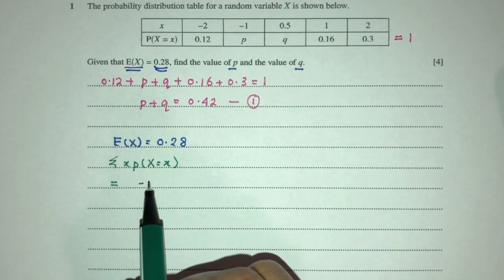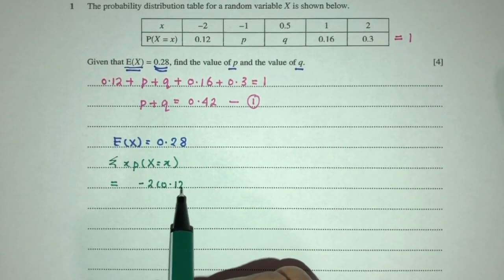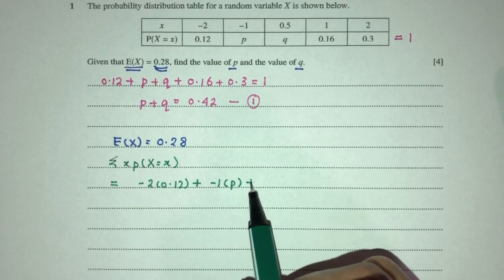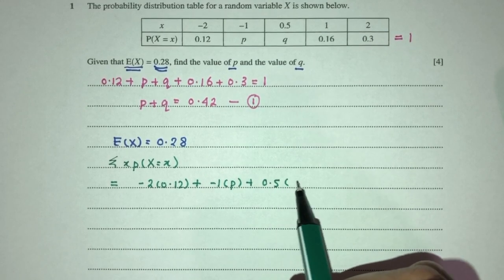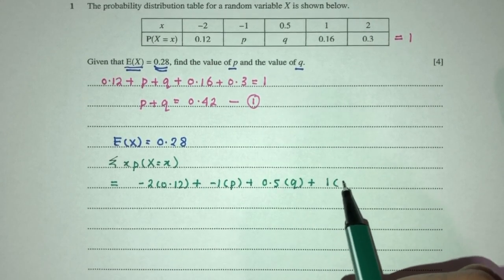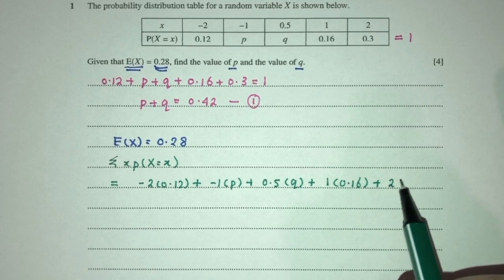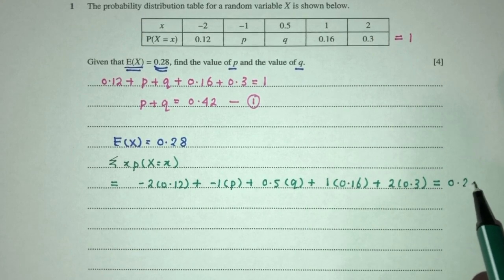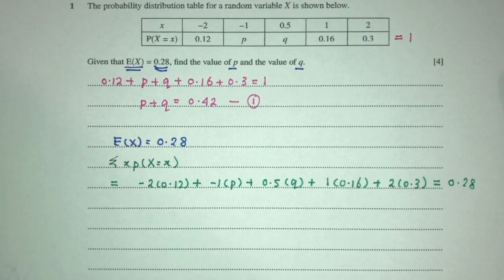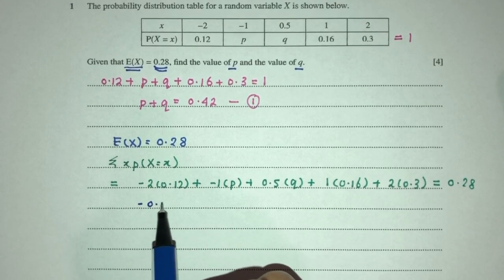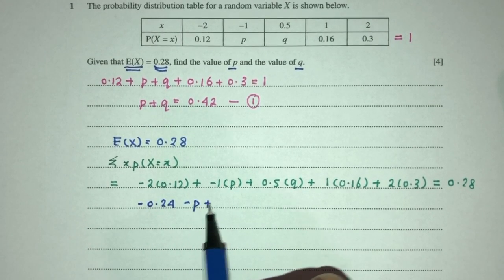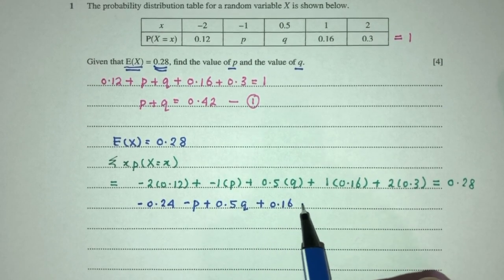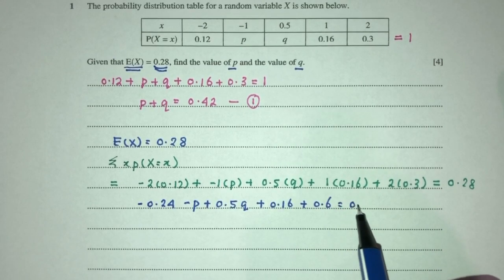So, we have to take minus 2 times 0.12 plus summation plus minus 1 times P plus 0.5 times Q plus 1 times 0.16 and 2 times 0.3. And we know all this will give you the value of 0.28 according to your question. So, now we can simplify.